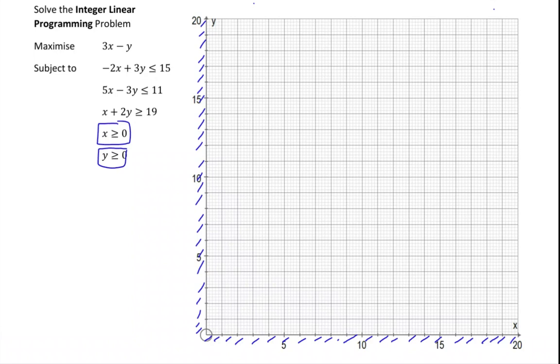Let's go for the first constraint. Minus 2x plus 3y is less than or equal to 15. That means that when x is 0 the y value is going to be 5 because you'll have 3y equals 15 so y equals 5. That means it's going through that point there. Now we just need to find another point.